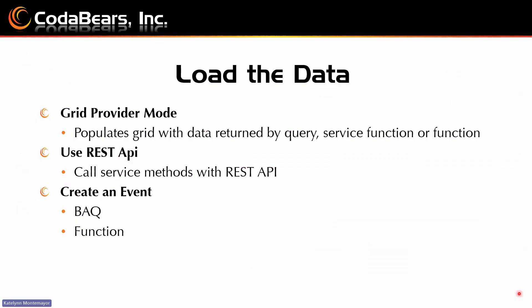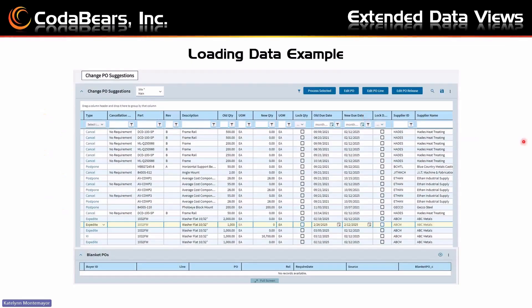Now let's get to how you load data into your data view. You have a few options. Grid Provider Mode automatically loads the data when the form or grid initializes from data returned by a query, service function, or function. Or you can use REST API, which calls a REST endpoint using the REST or REST ERP action, binding that response to the view. Or you can create an event and use a BAQ to pull data from that BAQ, or use a function and pull data from there.